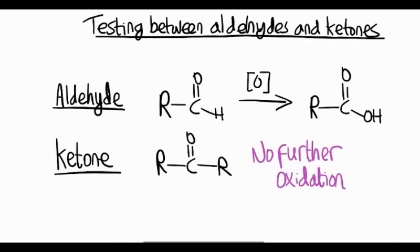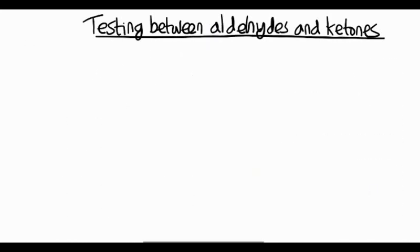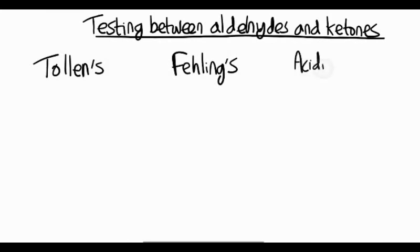We basically use mild oxidizing reagents, add them to our sample, and see if any oxidation happens. If it does happen, then we have an aldehyde. If it doesn't, then we have a ketone. So there are three tests we're going to have a look at. We're going to look at Tollens reagent, Fehling solution, and acidified potassium dichromate. You may have come across acidified potassium dichromate when you looked at the oxidation of primary, secondary, and tertiary alcohols.